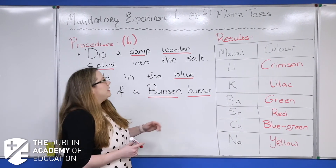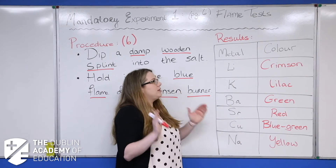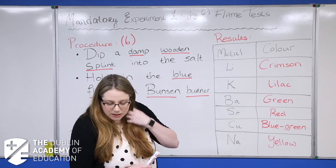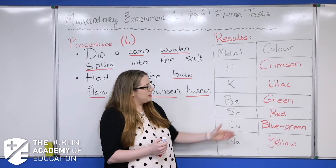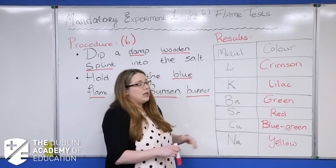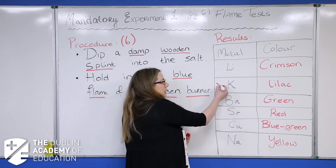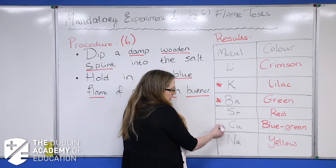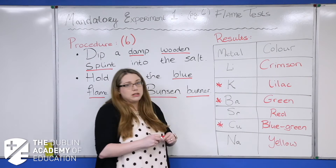That's your 6 marks. The results you just have to learn. On your notes, I've left a handy little box at the bottom of page 6 for you to come up with some sort of acronym to remember this. The most commonly asked ones are potassium, barium, and copper — they're the three biggies — but you do need to know all six.